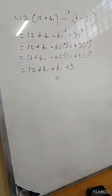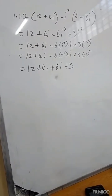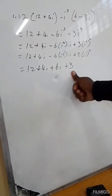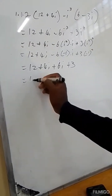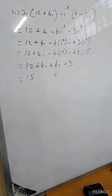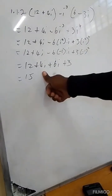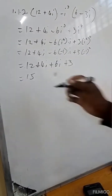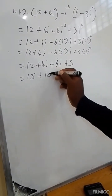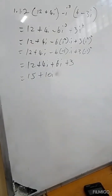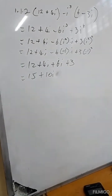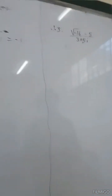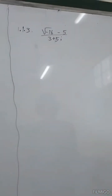Then we add the like terms: 12 and 3 are like terms, so 12 plus 3 equals 15. Then 4i plus 6i equals 10i. The final answer is 15 plus 10i.